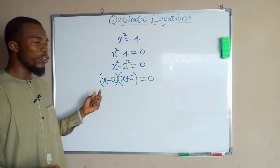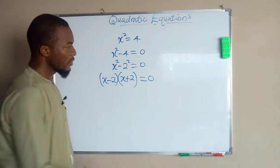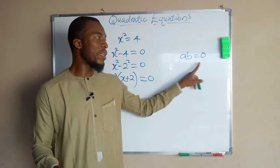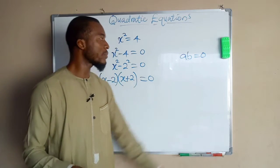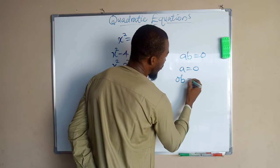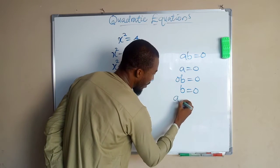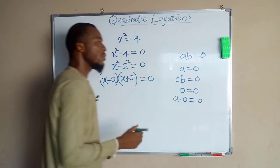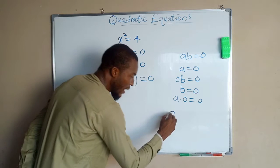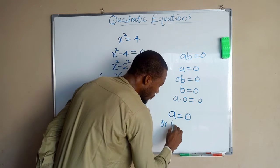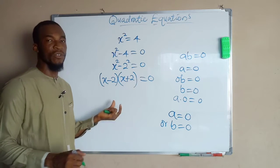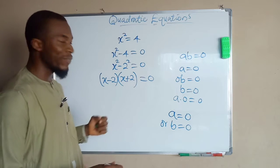On what condition will two numbers multiply to give 0? Suppose we have a multiplied by b equal to 0. This implies that either a or b is equal to 0 for this equation to be true. Because if a is 0, we have 0 times b equal to 0, and if b is 0, we have a times 0 equal to 0. Since we don't know which of the two factors is 0, we say a can equal 0 or b can equal 0, and the same principle applies here.